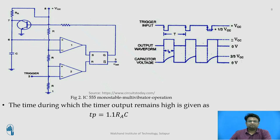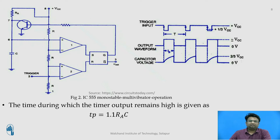Thus, the output returns to the stable state from the quasi-stable state. The output of the monostable multivibrator remains low until a trigger pulse is applied again to the terminal, and then the cycle repeats. The capacitor C has to charge through resistor RA. The larger the time constant RA × C, the longer it takes to charge the capacitor to reach 2/3 VCC. The RC time constant controls the width of the output pulse. The time during which the timer output remains high is given by Tp = 1.1 × RA × C.